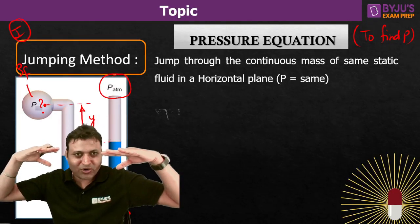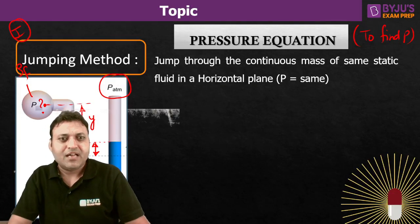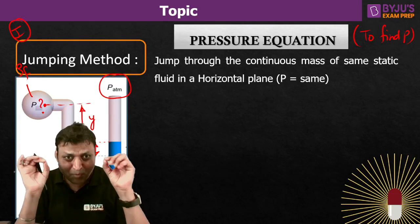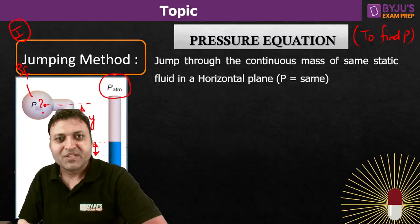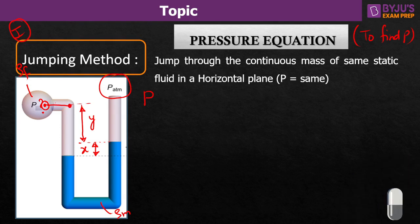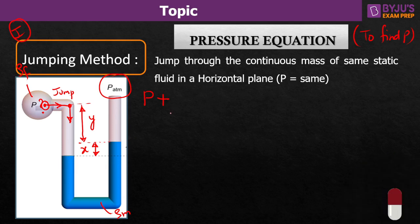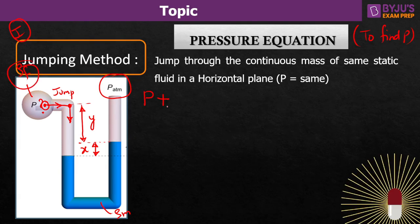The conditions for jumping are: the points must lie in the same horizontal plane, and the points must be joined by the same static fluid. If the pressure at a point is assumed to be P, according to Pascal's law these two points have the same pressure so we can jump from one to the other. This point will also have pressure P. Now, moving in the downward direction there will be a positive sign because pressure increases with depth, and we are traveling in the fluid of density rho F times G times Y.